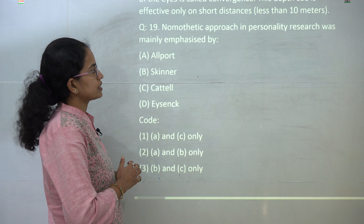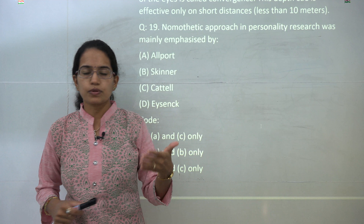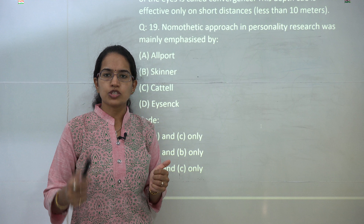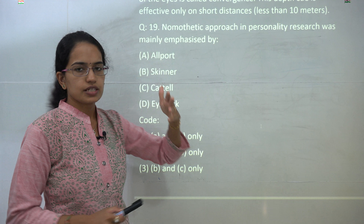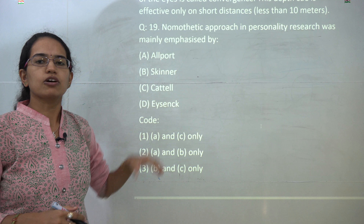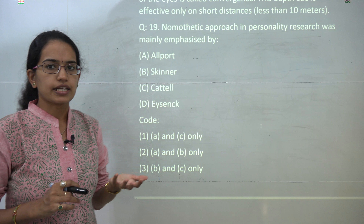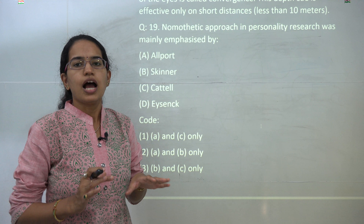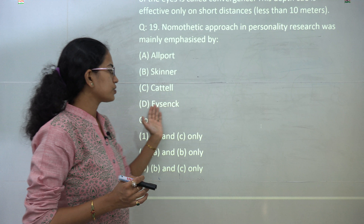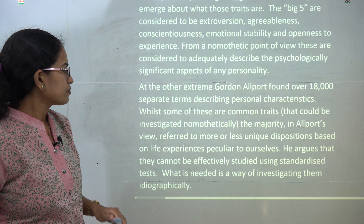The next question: the nomothetic approach in personality was emphasized by whom? There were two ways of approaching personality: nomothetic, which holds that personality traits are common to all, and ideographic. Allport gave these terms, but his philosophy was mainly ideographic — he listed more than 18,000 terms characterizing individual personality, most being unique to the individual. The correct answer here would be Cattell's Big Five theory and Eysenck's theory, so C and D are the correct options.